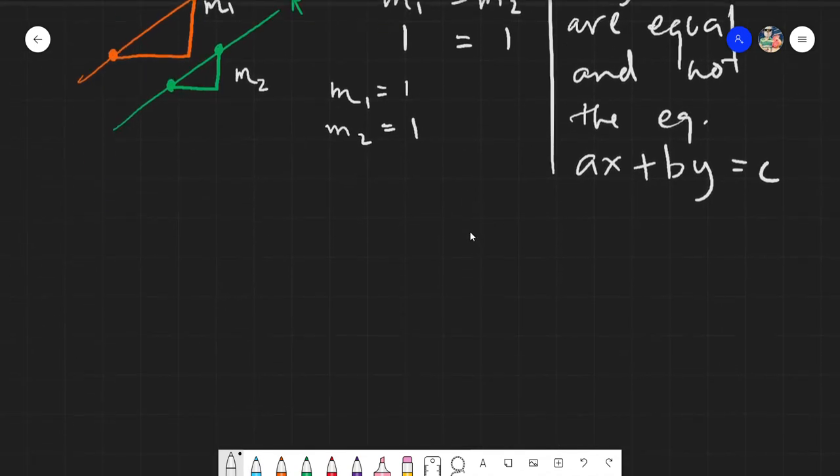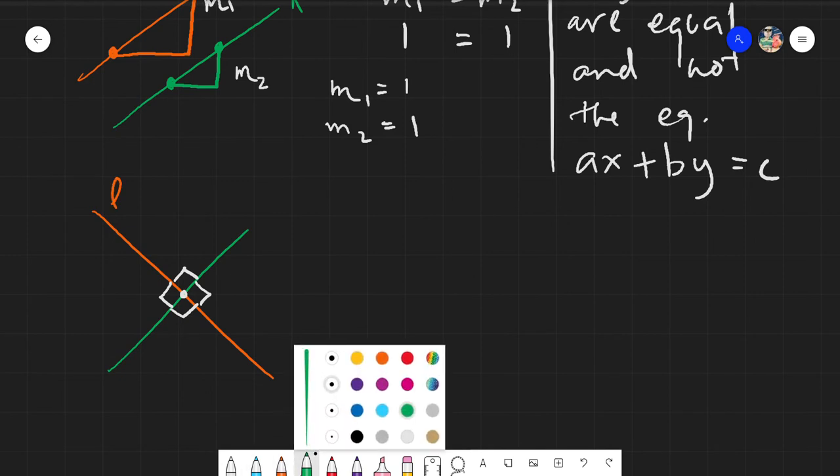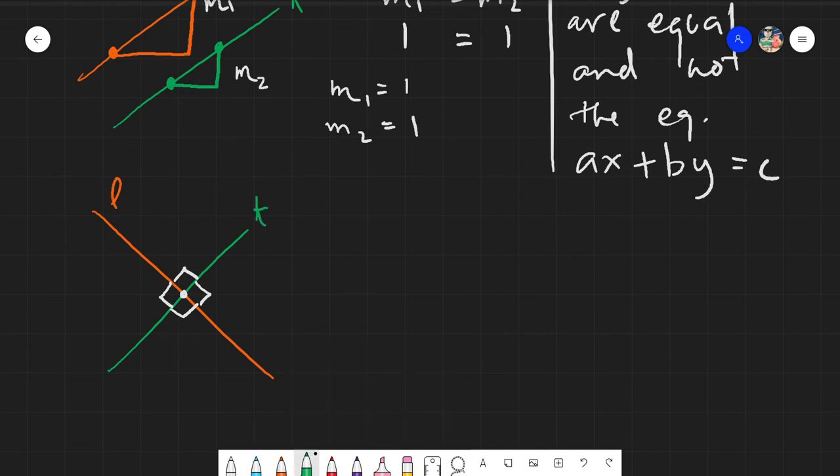Now let's go now to perpendicular lines. Perpendicular lines are simply lines. Let's say we have this one. They are simply lines that intersect once at a specific point here, and it would create four 90 degree angles. Say let's denote the first line as line L and the other line as line K.